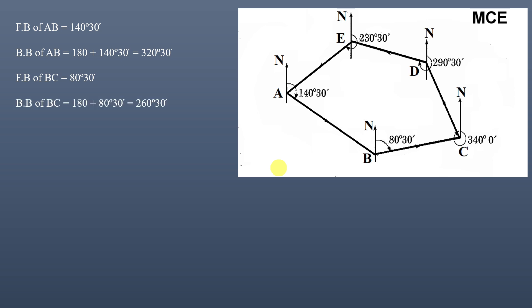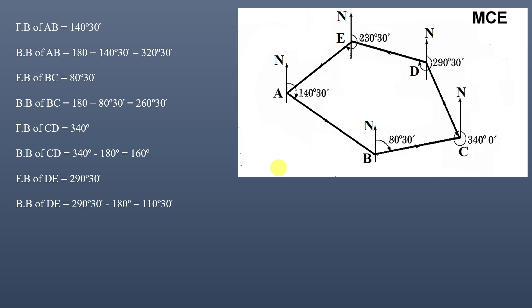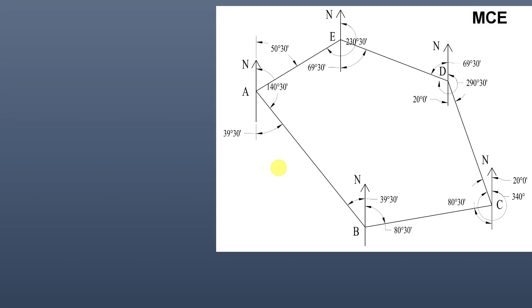Back bearing of BC = 260°30'. Fore bearing of CD is 340°, greater than 180°, so back bearing of CD = 340° − 180° = 160°. Fore bearing of DE is 290°30', greater than 180°, so back bearing = 290°30' − 180° = 110°30'. Finally, fore bearing of EA is 230°30', so back bearing = 230°30' − 180° = 50°30'.